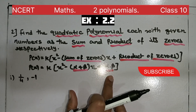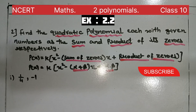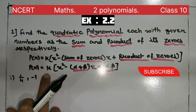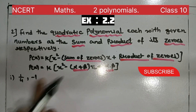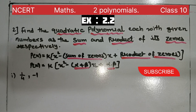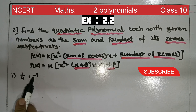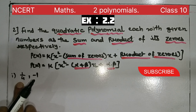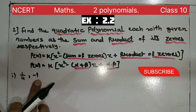We will put the sum and product values into the formula. K is generally assumed to be 1. First case: sum of zeros = 1/4 and product of zeros = -1. So α+β = 1/4 and α·β = -1.